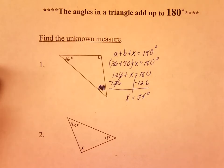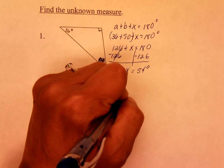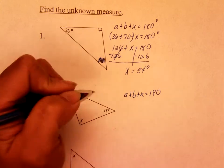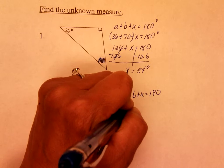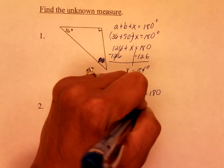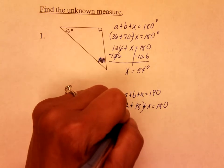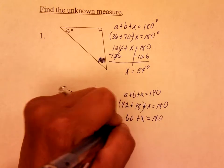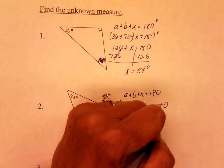Go ahead and try number two on your own, and when you're ready, you can push play. You should have done it algebraically: a plus b plus x is equal to 180. Change your variable to your degrees, so you have 42 plus 18 plus x is equal to 180. Add up your 42 and 18 and you get 60 plus x is equal to 180. Subtract 60 on both sides, and you get x is equal to 120 degrees.